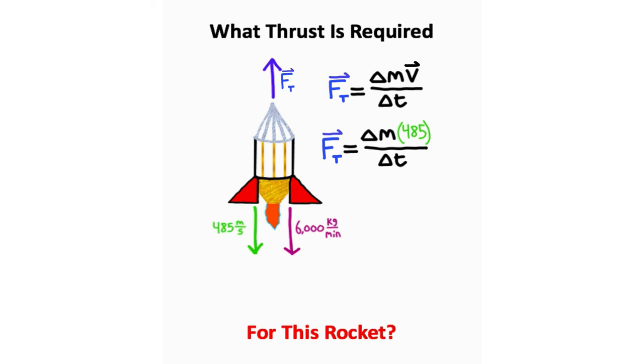So what we're going to have is 485 meters per second. And this rate represents the amount of fuel burned per minute. This is in kilograms per minute, and notice that we have a mass over time, but we can't actually plug 6,000 in. And the reason why is because this rate is in minutes. This rate is in seconds. So we actually have to convert our 6,000 kilograms per minute to kilograms per second.